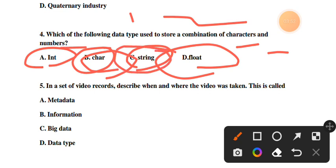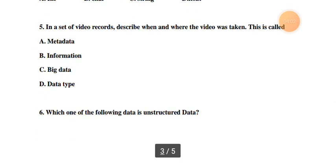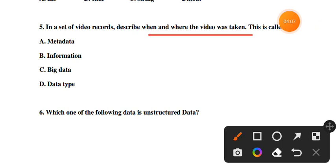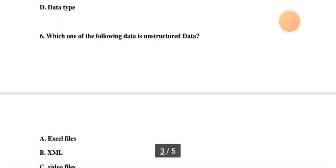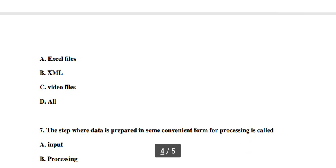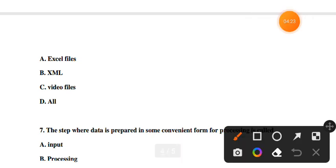In the state of video records, when it describes where and when the video was taken, this is called metadata. Metadata is information about the data - data about data. Number six: Which of the following data is unstructured data? The answer is video files. Excel files are examples of structured data, while video files are unstructured.